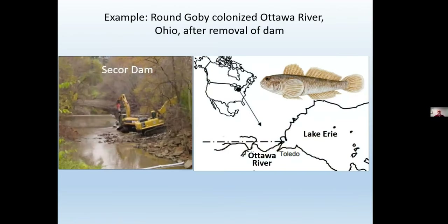Here's an example involving a species called the round goby, which is invasive in the Great Lakes, particularly in Lake Erie. It had been prevented from moving far up into the Ottawa River by a dam — the Second War Dam. But that dam was removed, and therefore these invasive fish were able to move upstream and cause harm for the native fishes. So getting rid of barriers and promoting connectivity is a double-edged sword.